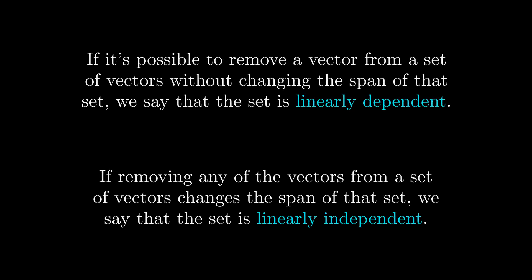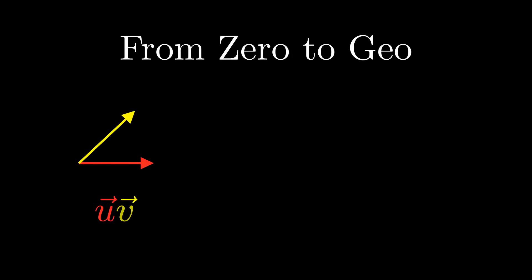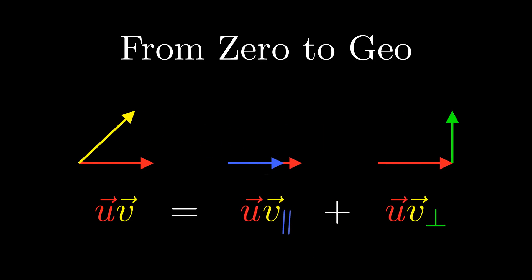In the last video, we learned about linear dependence and linear independence. We saw that linear independence is a useful property for our spanning sets to have, so we called a linearly independent spanning set a basis. In the process of learning all of this, things have gotten increasingly abstract. Is there any practical application for any of this? That is what we will answer in this video. This video is a part of From Zero to Geo, a series where we formulate geometric algebra, an incredibly powerful branch of mathematics, from the ground up.